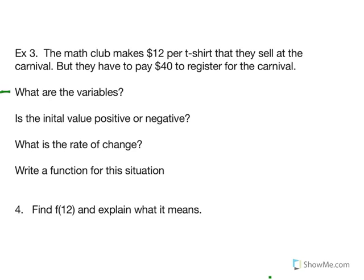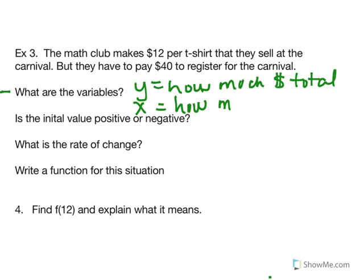They're making some money off t-shirts, but they have to pay a registration fee. So what don't we know? We don't know how much money they're going to make altogether. That's what we're going to call y. Because how much money they make altogether depends. What does it depend on? It depends on how many t-shirts they sell.